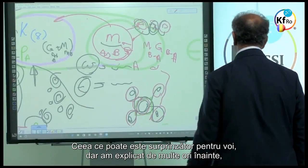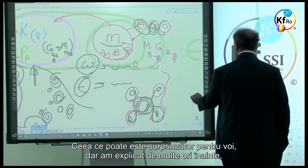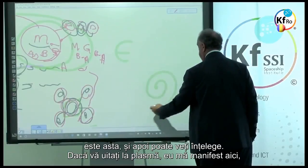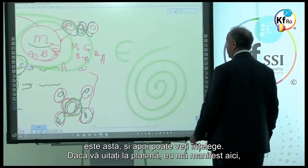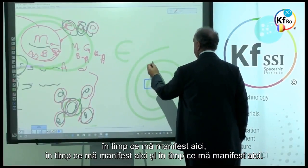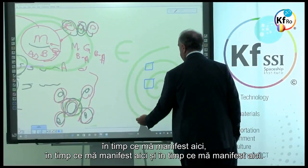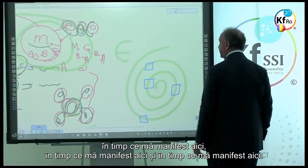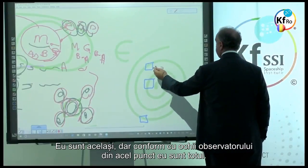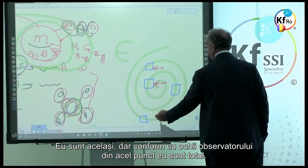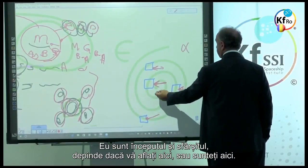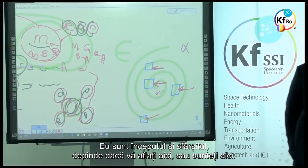What might be a surprise to you, but I've explained many times before, is this. And then you might understand. If you look at the plasma, I am manifested at this, while I'm manifested at this, while I'm manifested at this, and while I'm manifested at this, I am the same. But according to the eye of the observer at that point, I am everything. I am the beginning on the end. Depends, are you standing here or are you here?